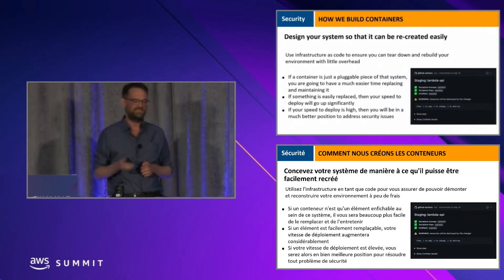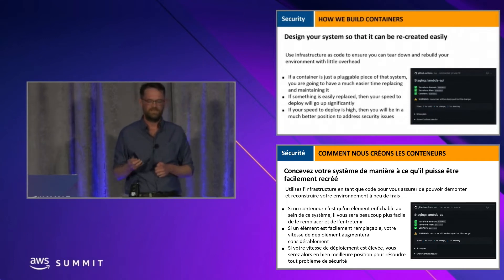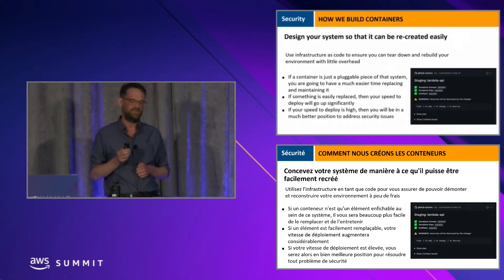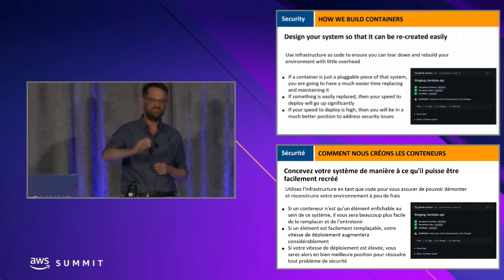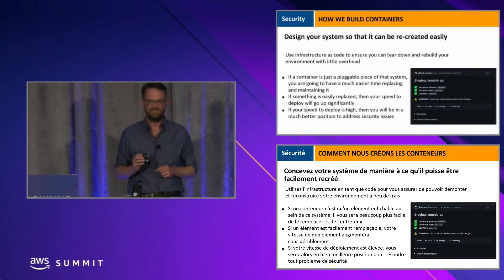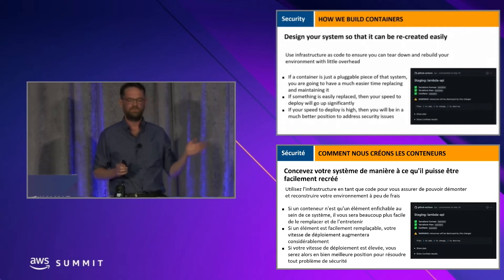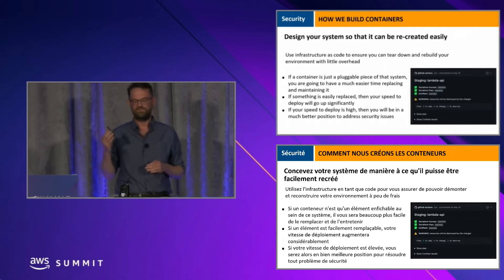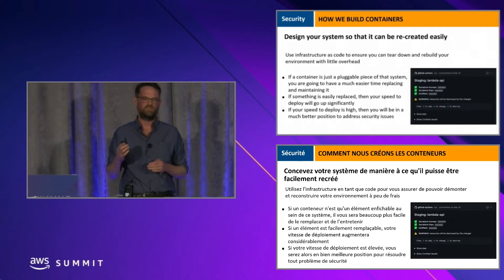The next recommendation is to design your system so that it can be recreated easily. Use infrastructure as code to ensure you can tear down and rebuild your environment with as little overhead as possible. If a container is just a pluggable piece of that system, you'll have a much easier time replacing and maintaining it. If something is easily replaced, your speed to deploy goes up significantly, and if your speed to deploy is high, you'll be in a much better position to address security issues.